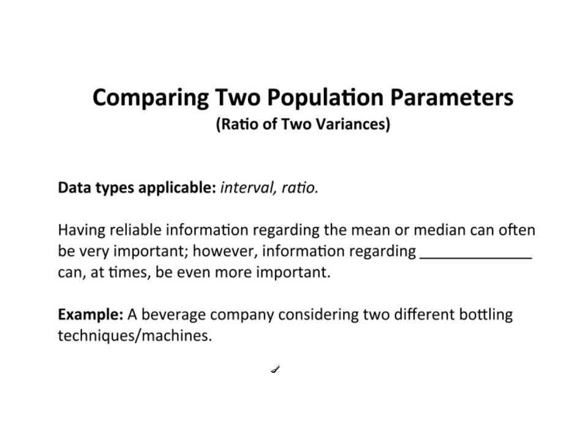So now let's take a look at some procedures for testing two different population parameters. We're going to start with looking at two variances. The way that we compare two variances is by examining the ratio of the variances.